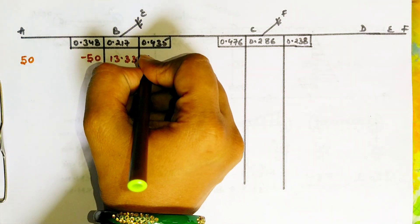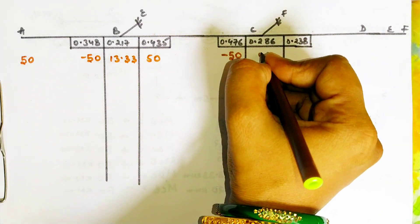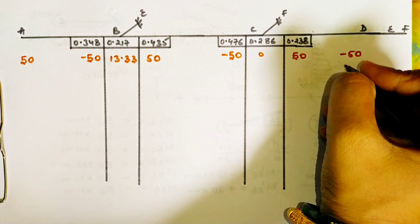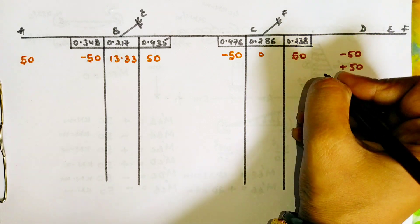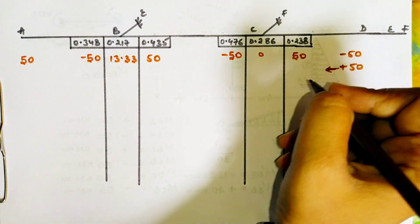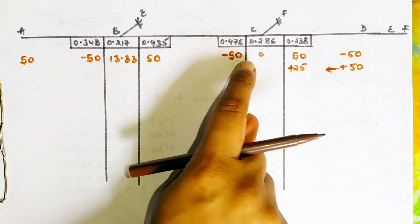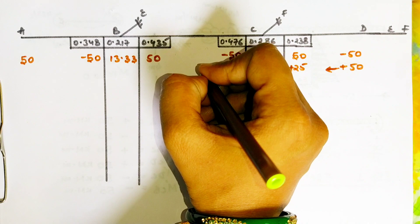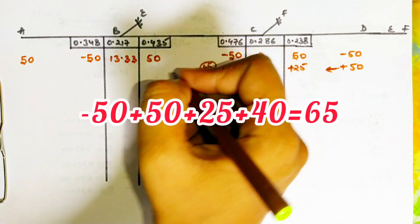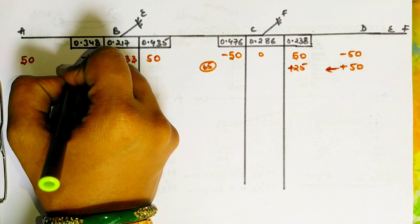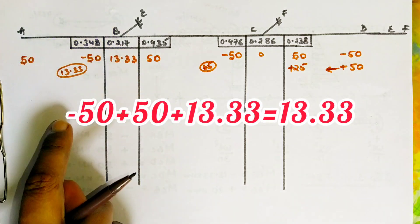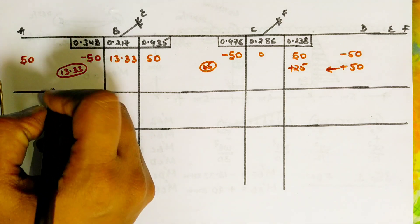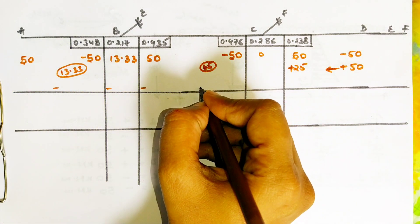Next, write down all the fixed end moments from the previous page. Here D is a hinged support, and at a hinge the moment is always zero. So whatever fixed end moment came at D, we make it zero — we apply an opposite sign with the same magnitude and half of it is transferred to the far end. At joint C, adding all moments: positive 25 plus the anti-clockwise applied moment which is also positive gives 65.